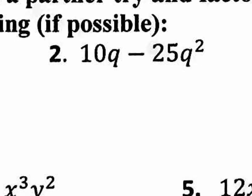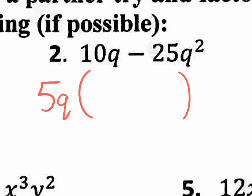Let's move on to number 2. What's in common in this first term and the second term? The 10 and the 25 — there's definitely the number 5, the multiple of 5 that we're going to pull out. Let's start with the parentheses, put that 5 out there. There are also Qs in both terms, so the maximum amount of Qs I could pull out from both at the same time is 1Q. So the GCF is 5Q. 5Q times what gets us back here? 2. And 5Q times what gets us back there? Negative 5Q.